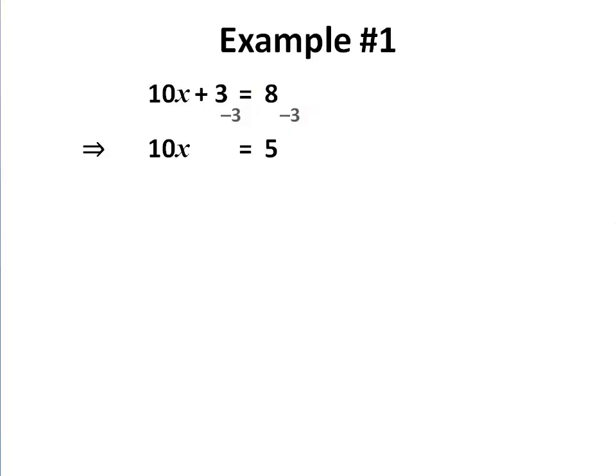We now have another equation made simpler, and we want the x, so we've got to get rid of the 10. We divide both sides by 10. That leaves our x, and 5 divided by 10 is 0.5. Again, because I've written 5 divided by 10 on the page directly, I cannot accidentally compute 10 divided by 5. The layout prevents that error from being made. And so we have our answer.